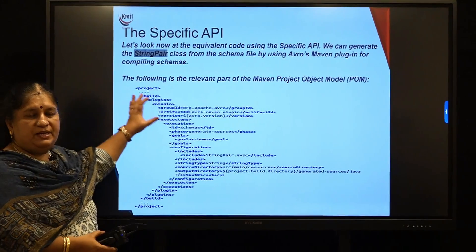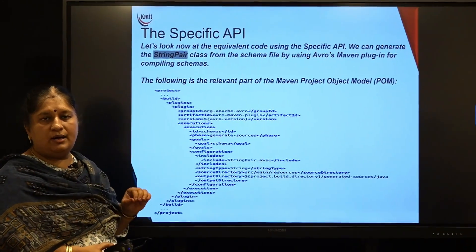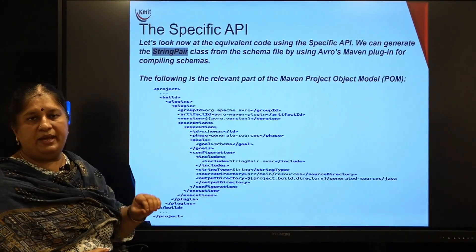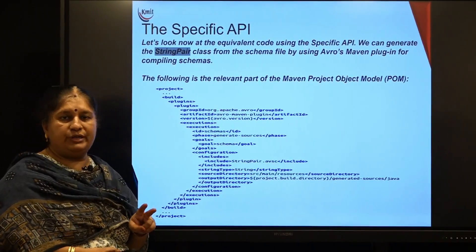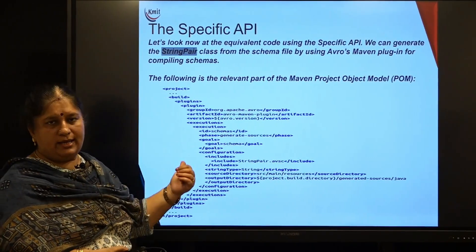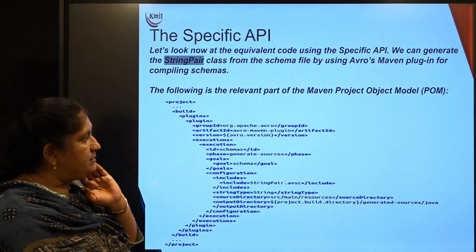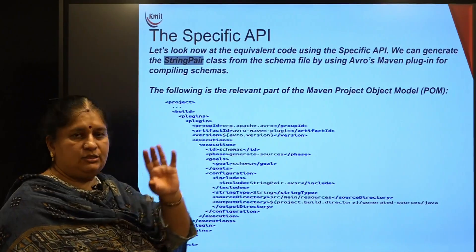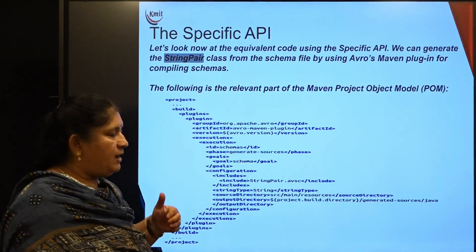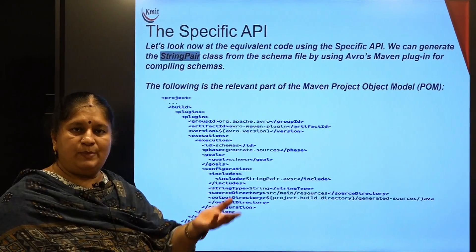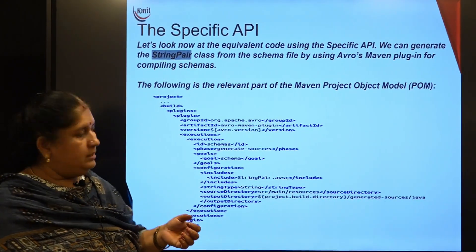Regarding the specific API — in the previous session, I defined something called a string pair as a record, which consists of two strings: one called left and the other called right. I was writing Java code in order to maintain this. What if I have a specific API in order to maintain the same thing?